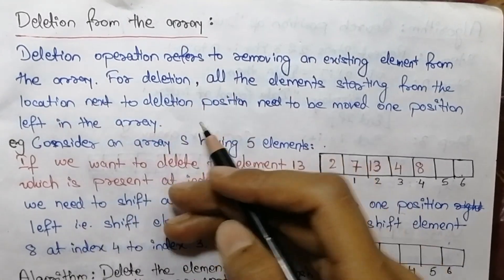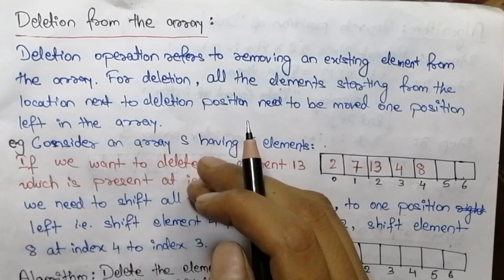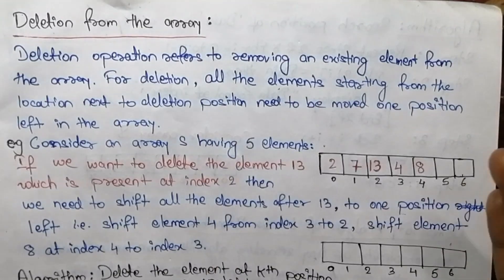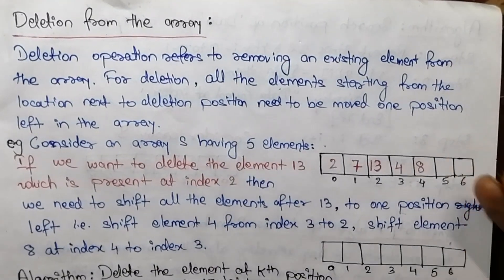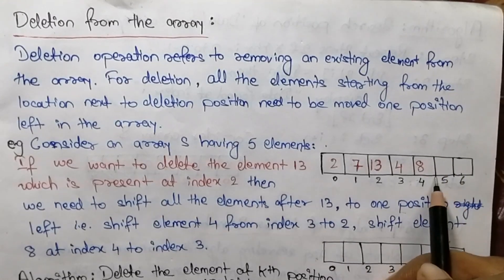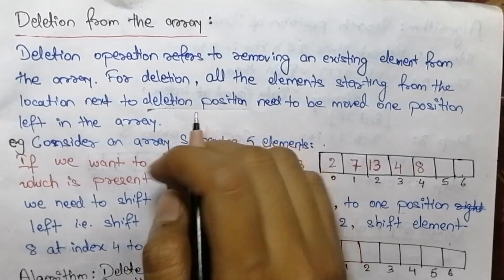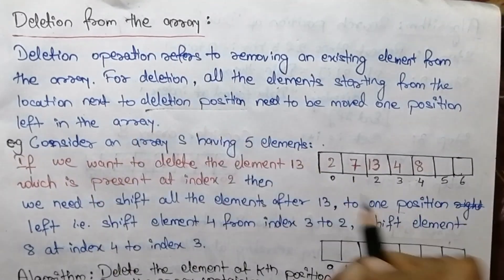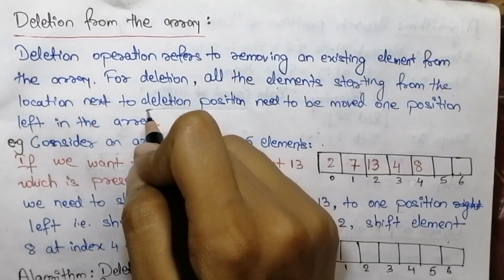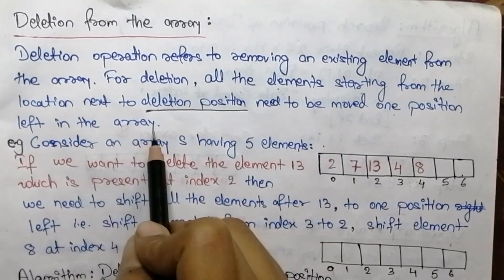Removal of any element from the end of the array is a very simple operation, as no data movement is involved in this process. If we want to delete an element from the last position, we can simply traverse the whole array and delete the element at the last position. But for elements in between the array, all elements starting from the location next to the deletion position need to be moved one position left.